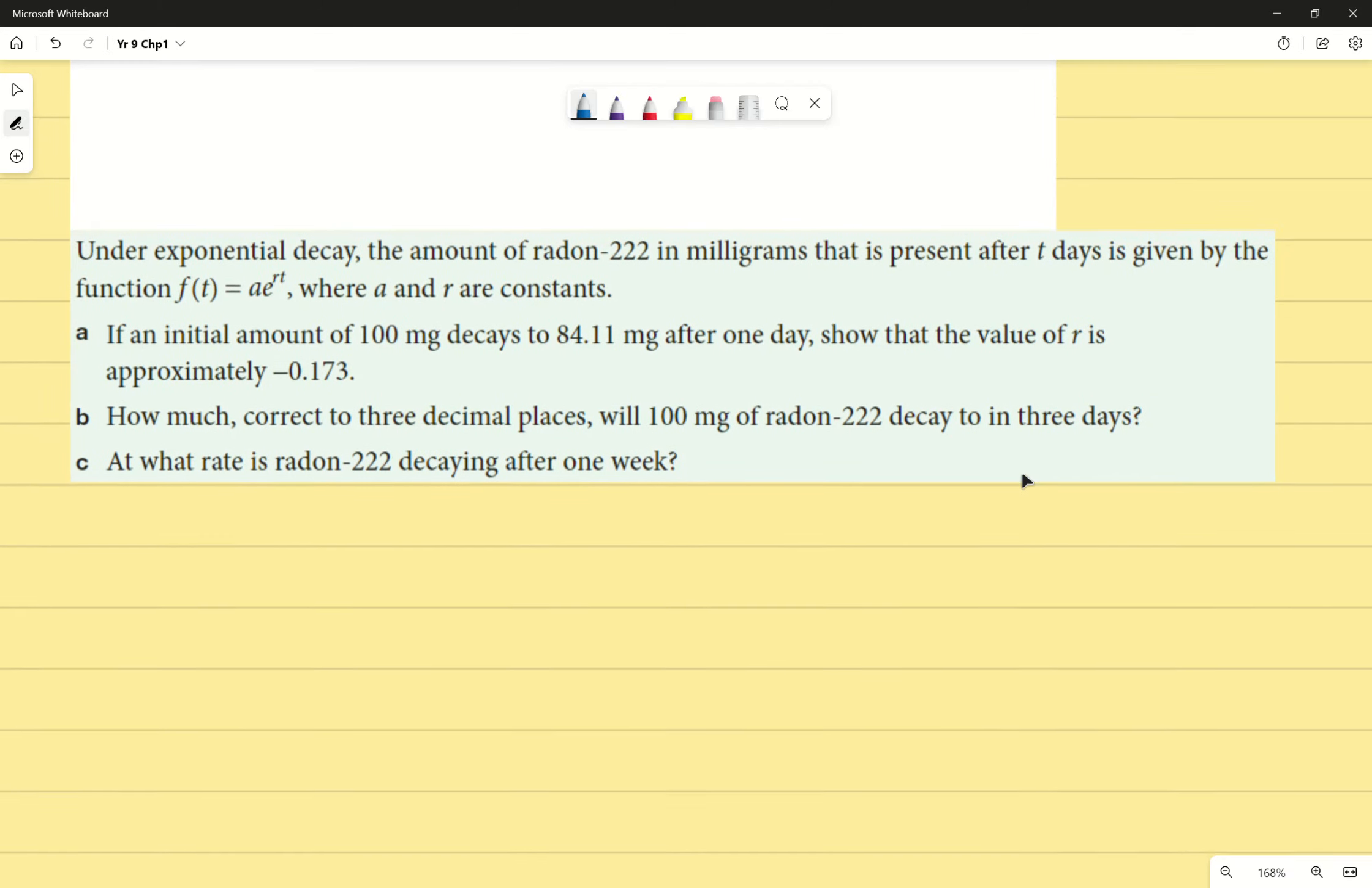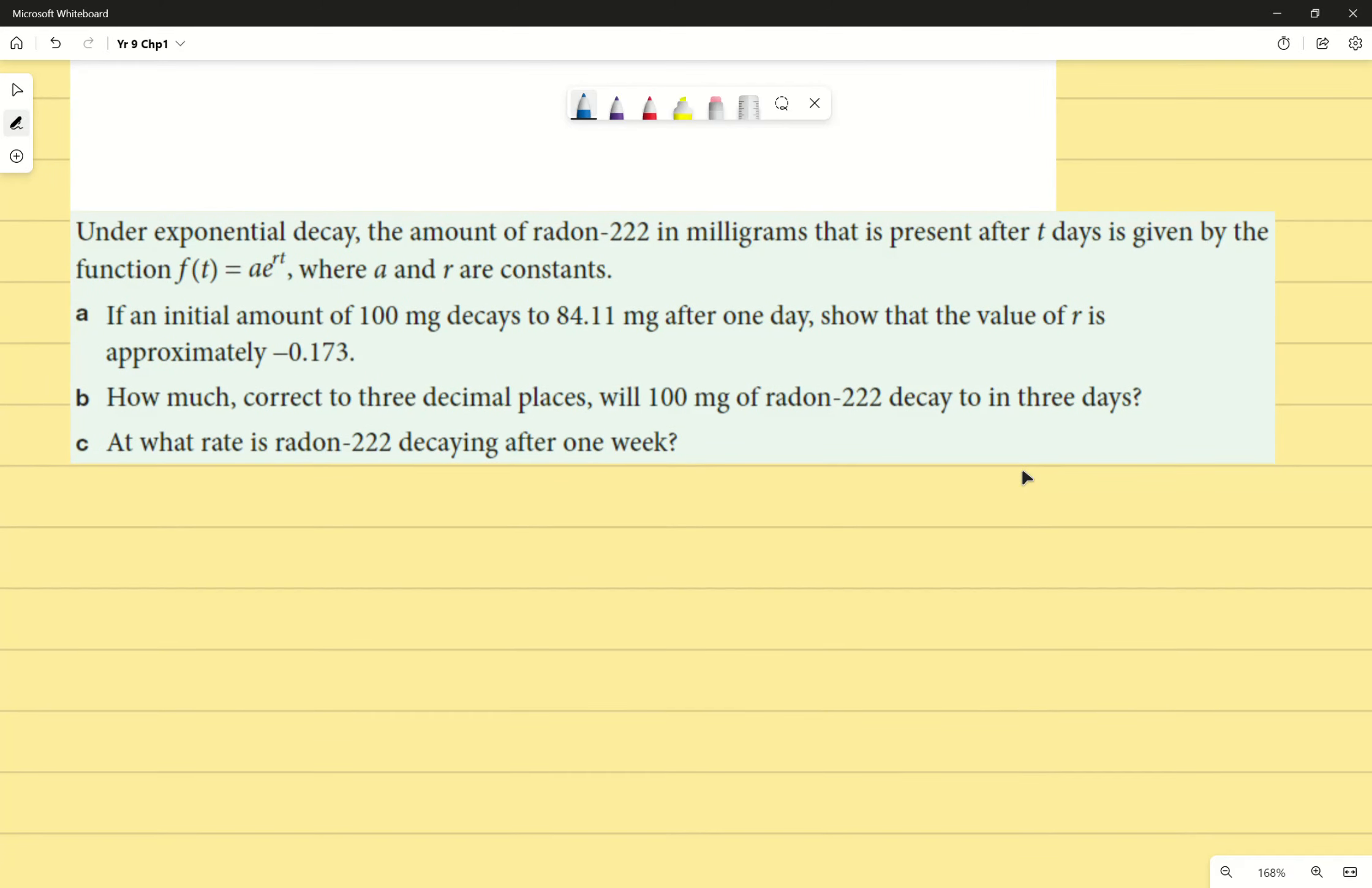Last example. This is a perfect example of practicing using, finding the derivative of an exponential decay. Under exponential decay, the amount of radon 222 in milligrams that is present after t days is given by the function f(t) equals a times e to the power of rt, where a and r are constants. Constants, we're saying that those do not change over time. Those are just individual values.